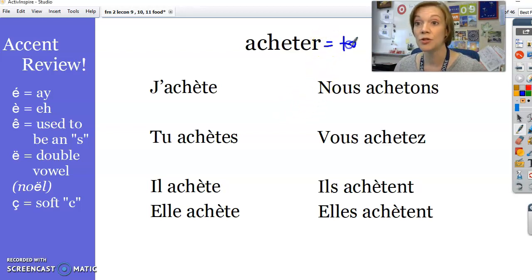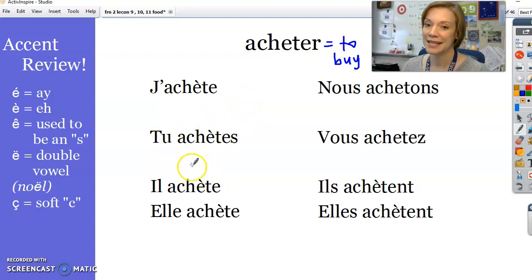This next verb is the verb acheter. Acheter means to buy. C'est la rentrée demain. Je vais faire des achats. Comes from that. Des achats are purchases, things you buy. Acheter is the verb to buy. Notice the conjugation as I go through it. J'achète. Tu achètes. Il achète. Elle achète.